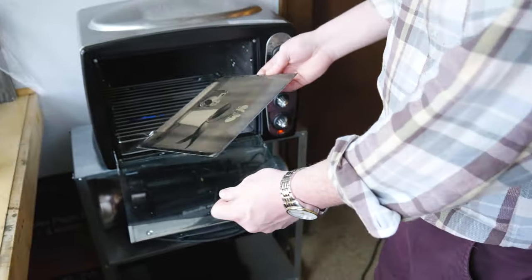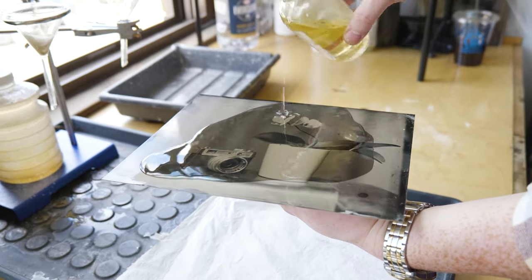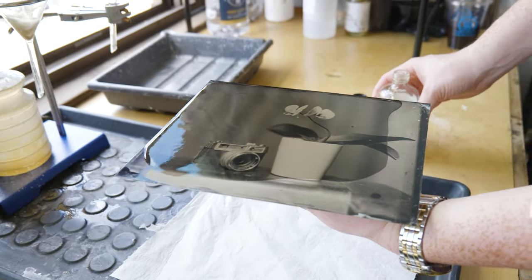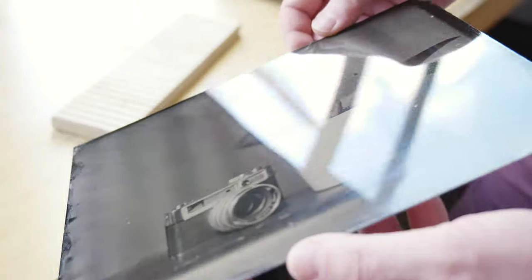From here we do a few other things. We dry the plate and we scan it in and we seal it to protect it from minor scratches or tarnishing in the future. And that's the tintype process.